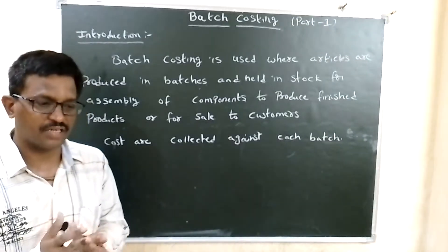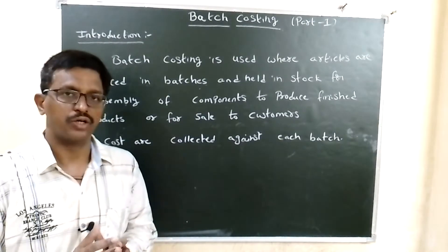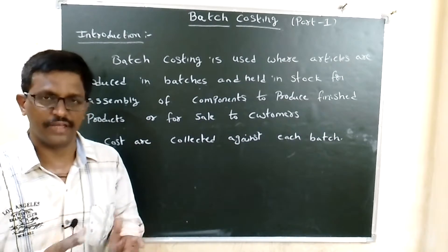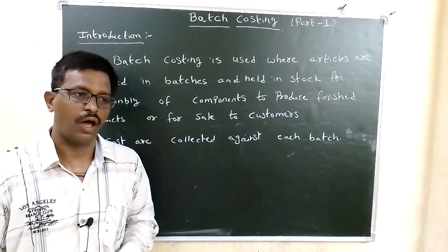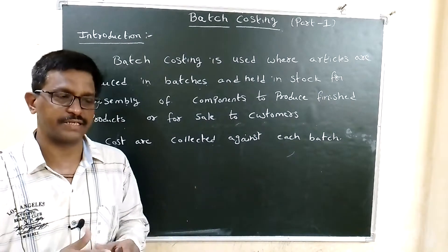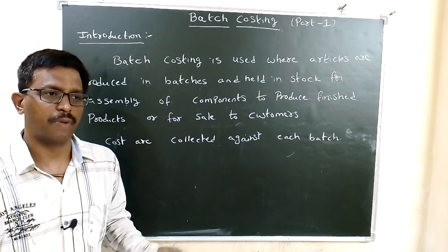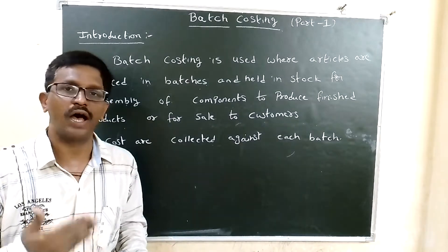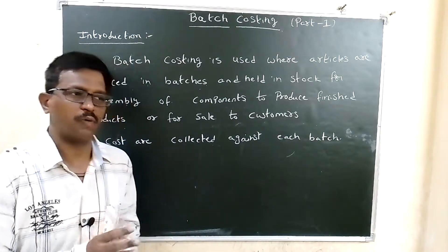Batch costing — the goods which are manufactured in bulk, that is, manufactured in large quantity. Goods are manufactured in large quantity and assembled together. It involves assembling a number of products into one product. This is also known as mass production, meaning heavy quantities are produced. It is batch-wise production.